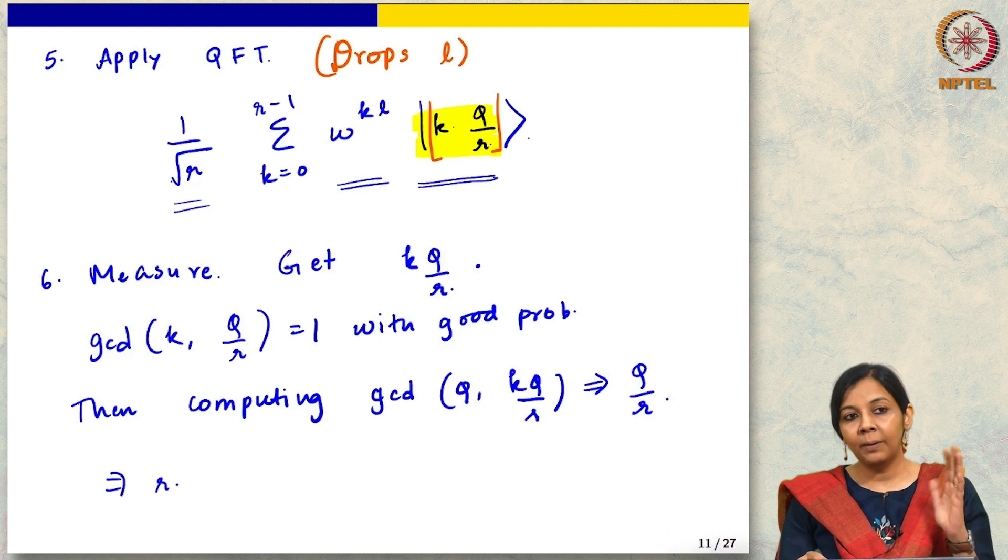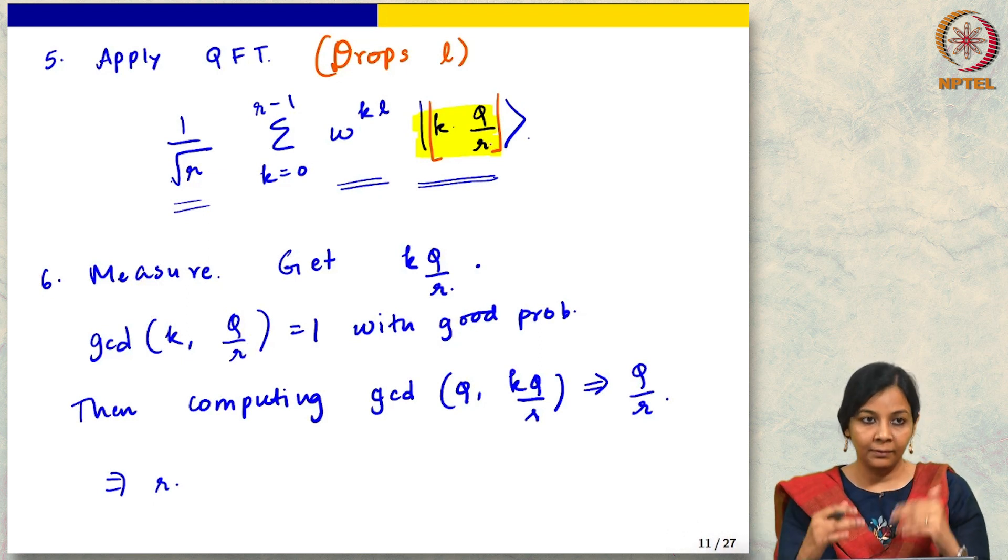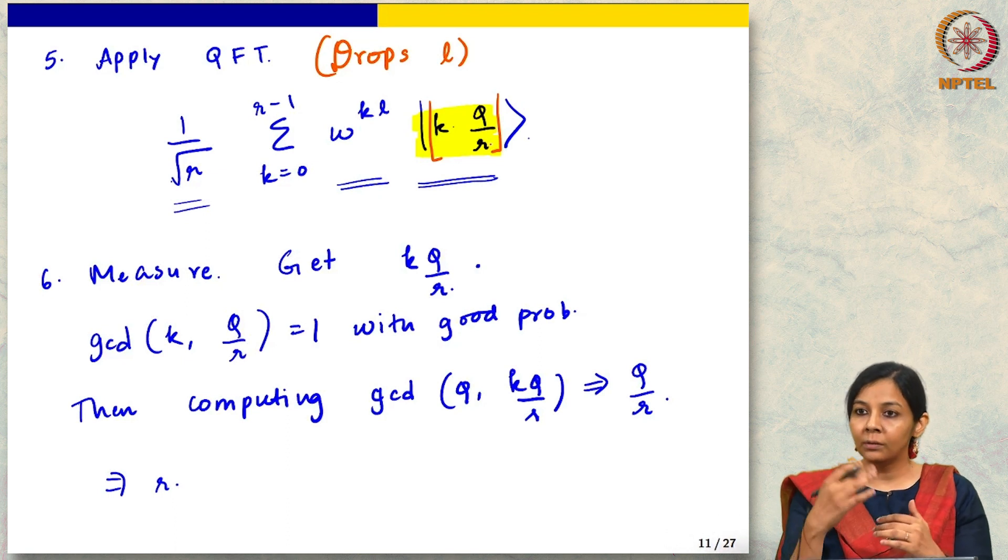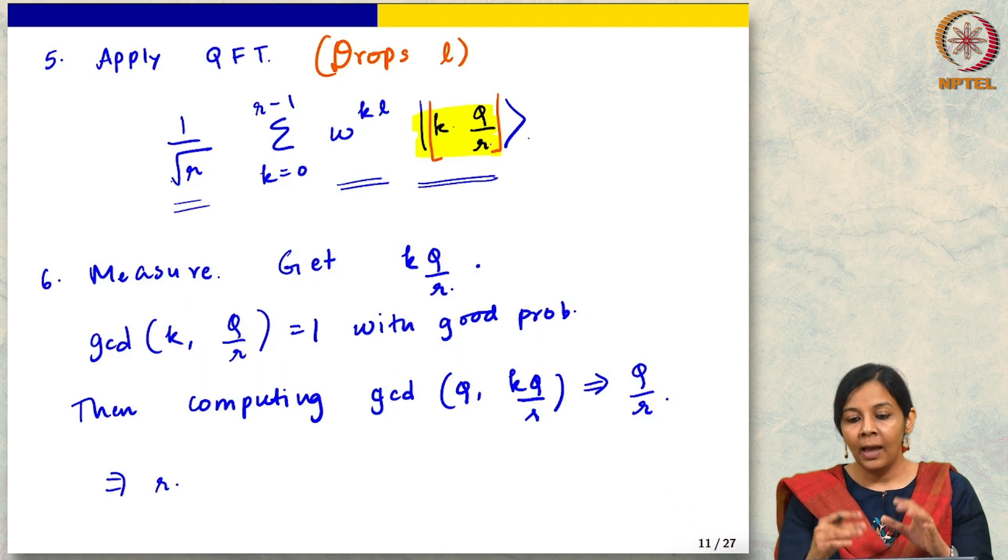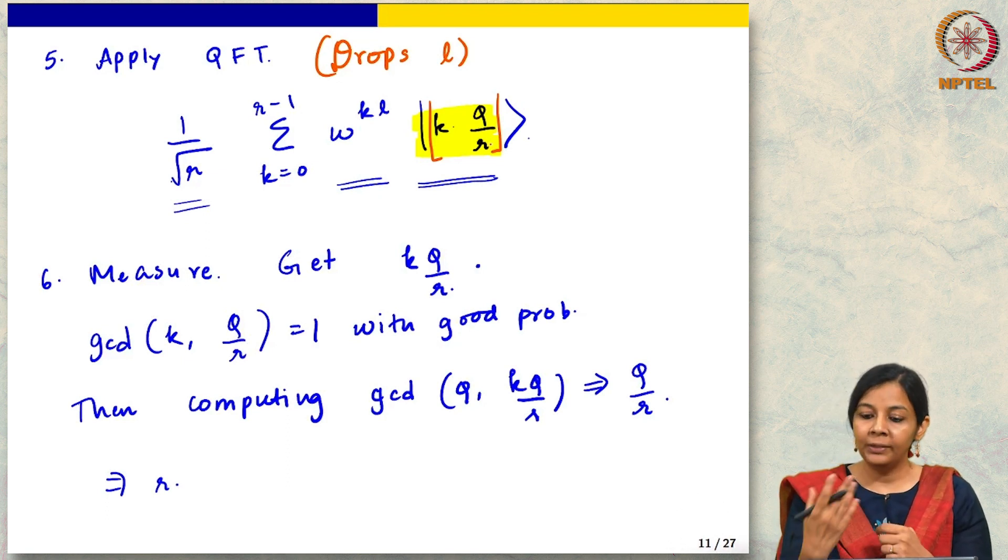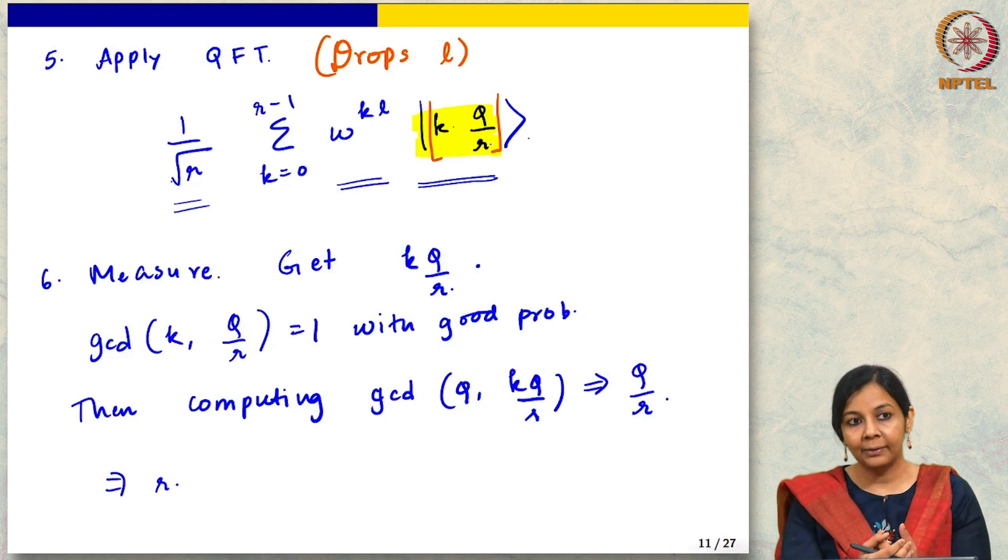Are there any questions about what we have done so far? Remember we started by looking at discrete log and factoring. We said that discrete log reduces to period finding, we said that factoring reduces to order finding—we did this in some steps, right? Finding a non-trivial square root of 1 mod n, and then finding an order which will give us a non-trivial square root of 1 mod n. And then we developed this algorithm to find the order.